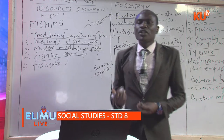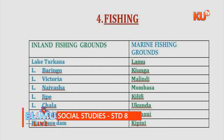Examples of inland fishing grounds include Lake Turkana, Baringo, Victoria, Naivasha, Jipe, and Shala. Marine fishing grounds include Lamu, Kiunga, Malindi, Mombasa, Kilifi, Ukunda, and Shimoni. When talking about inland, we are talking about rivers and lakes, and when talking about marine, we are talking about oceans and seas.